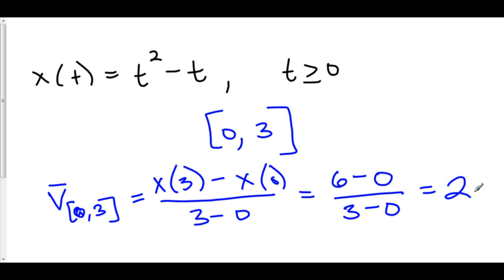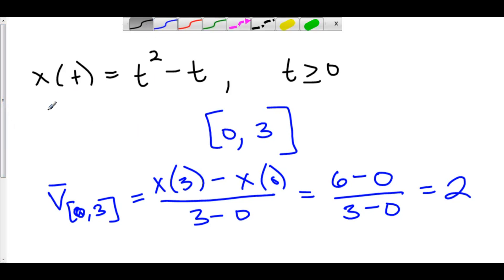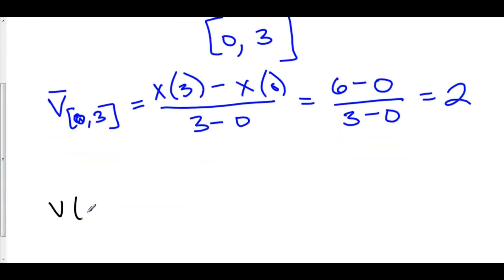However, we can also interpret average velocity as the average function value of velocity. Consider the velocity function: v of t is the derivative of x of t, so v of t is equal to two t minus one.